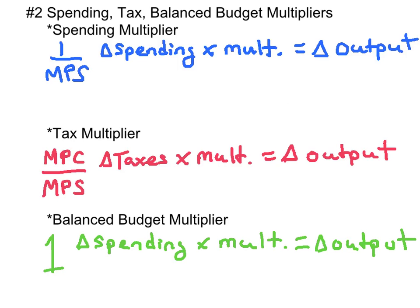The next concept that you should have mastered for exam day is the multipliers: the spending multiplier, the tax multiplier, and the balanced budget multiplier. The spending multiplier is used to determine the change in output from a change in spending. To get the spending multiplier, you take 1 and divide it by the marginal propensity to save. The change in spending times the spending multiplier will give us the change in overall output.